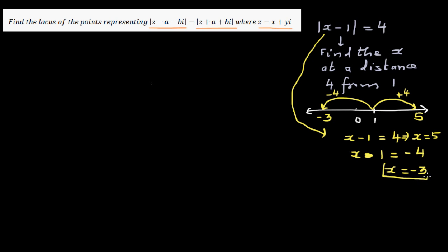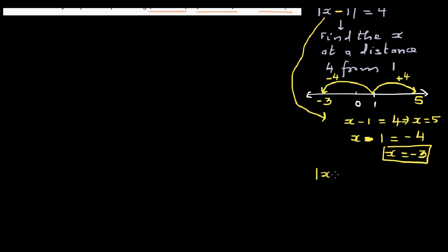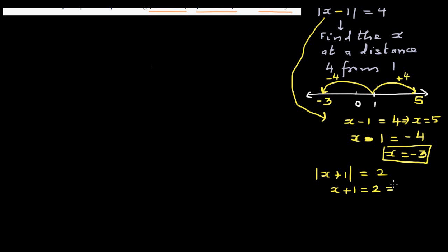Now suppose instead it is |x + 1| = 2. Writing in minus form, let's do this algebraically first. x + 1 = 2, which gives x = 1. Or x + 1 = -2, because the absolute value of -2 is 2, so x = -3.